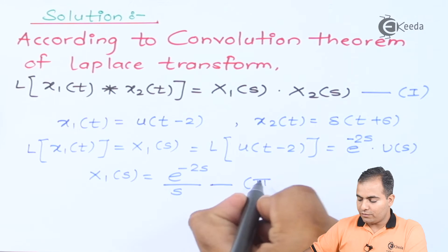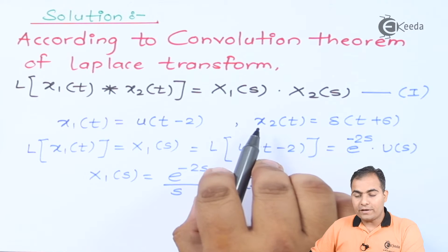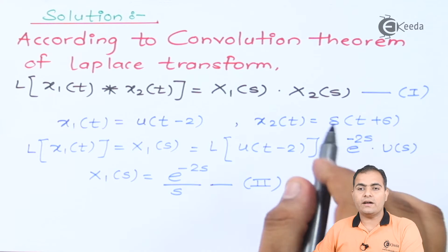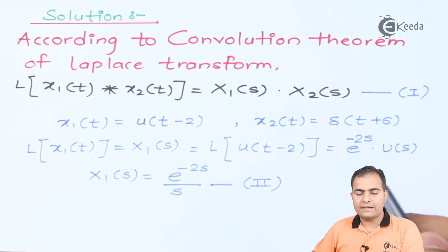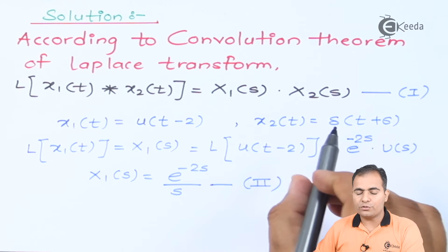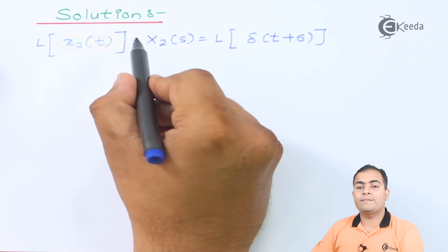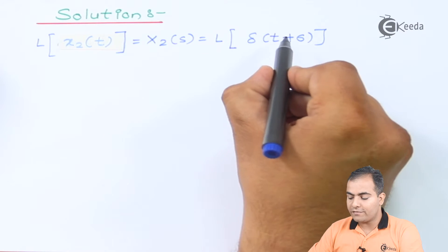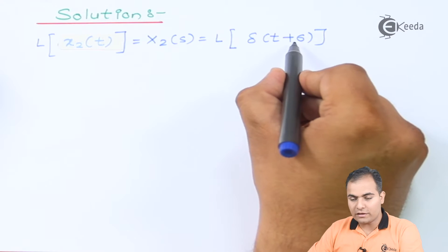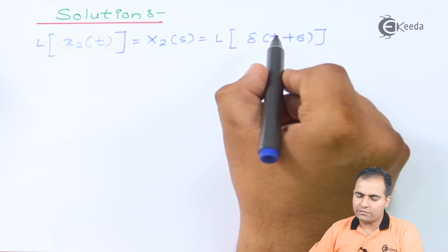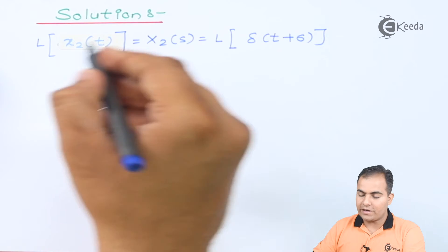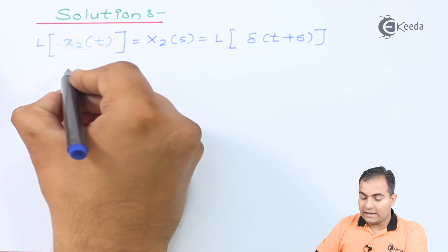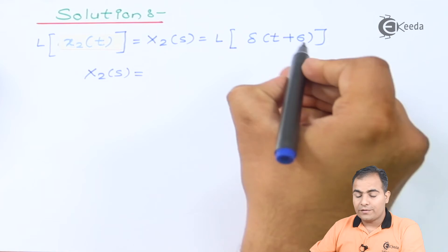Now x2(t) will be transformed into the Laplace domain to give Equation 3. We find the Laplace transform of x2(t), represented by X2(s). x2(t) is given as δ(t+6). Here the function is advanced by 6, so we use the time-shifting property to find X2(s).